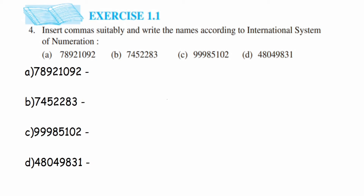There are different periods. The first three digits from the right-hand side are called the ones period, the next three digits are called the thousands period, and the next is called the millions period. After that we have billions, but that's not needed here, so we go up to millions.